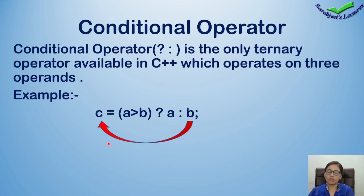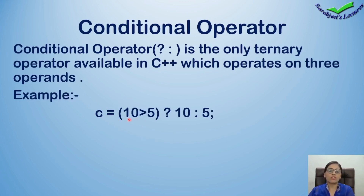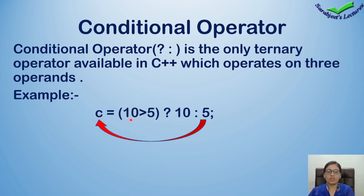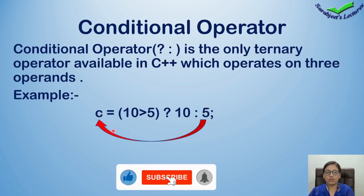Isko hum constant values ki madad se dekhte hai. Humne a ki jagah pe 10 likh diya hai, aur b ki place pe humne 5 likh diya hai. Hum 10 aur 5 ko compare karenge. Agar 10 ki value 5 se greater ho jaati hai, tab hum 10 ko c mein store kar denge — 10 c mein jaake store ho jayega. Aur agar yeh condition false ho jaaye, toh 5 humara c mein jaake store ho jayega. Abhi yahan pe condition true hai — 10 is greater than 5. Toh kya hoga? 10 jaake c mein store ho jayega. Condition humari yahan pe true hai, isliye false wala jo humara value hai, woh execute hi nahi hoga. Sirf humara 10 c mein jaake store ho jayega. Greatest value hai, 10 mil jayega.